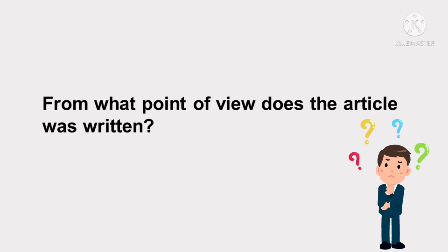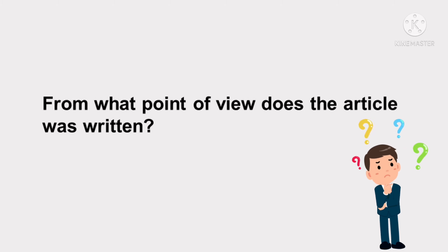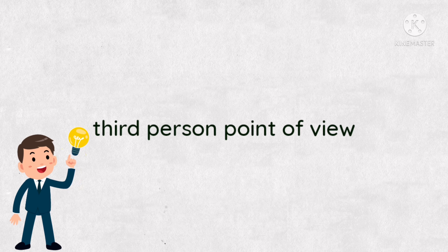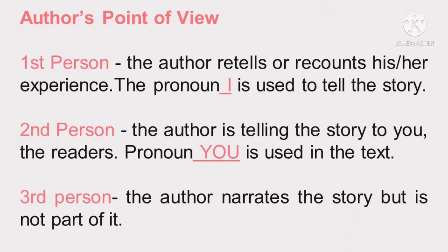From what point of view was the article written? The article was written in the third-person point of view. The author narrated the story and described the feelings and thoughts of the characters. Author's point of view, or sometimes called the author's perspective, answers the question: who is telling the story? In first person, the author retells or recounts his or her own experience, and the pronoun "I" is used to tell the story.